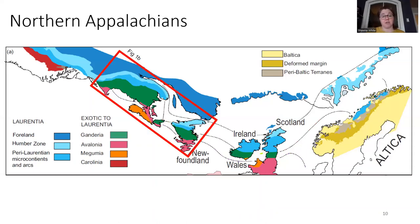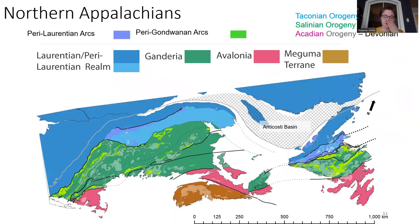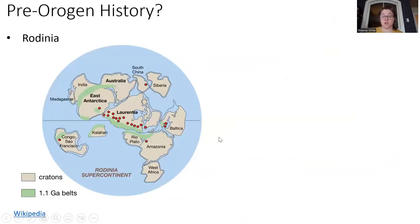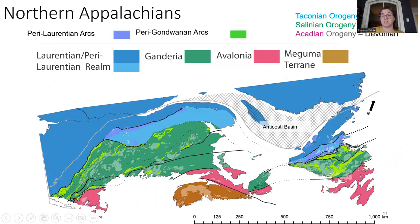Our first step is to look at the Northern Appalachians — zooming in from New England through Newfoundland. The blue rocks are deformed Paleozoic rocks of Laurentian affinity, and everything else — green, pink, and brown — are zones or terrains of exotic Gondwanan affinity accreted to the Laurentian margin during various phases of orogenesis, resulting in the Taconian, Salinan, and Acadian orogeny as the Iapetus ocean closed. What I'm going to focus on is largely accretion events, the Taconian orogeny, and how those events are affected by pre-existing structures.